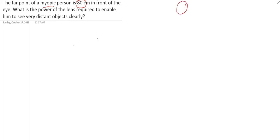Let us take the example of a normal eye. A normal eye can see objects distinctly from 25 centimeters to infinity. You can keep the object anywhere between 25 centimeters to infinity and a normal eye can see all those objects clearly.